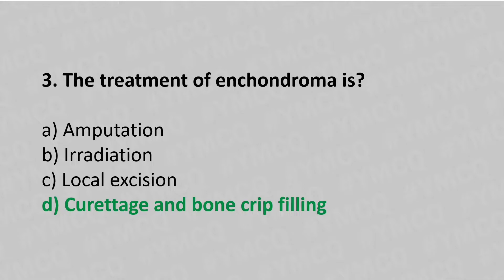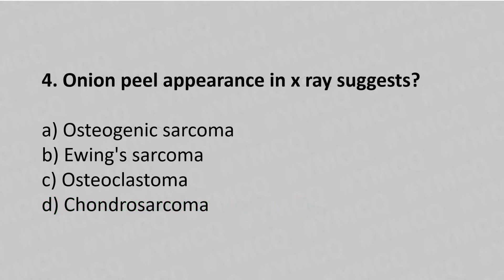Now let's move to question number 4. Onion peel appearance on X-ray suggests — option A: osteogenic sarcoma, option B: Ewing sarcoma, option C: osteoclastoma, option D: chondro sarcoma.